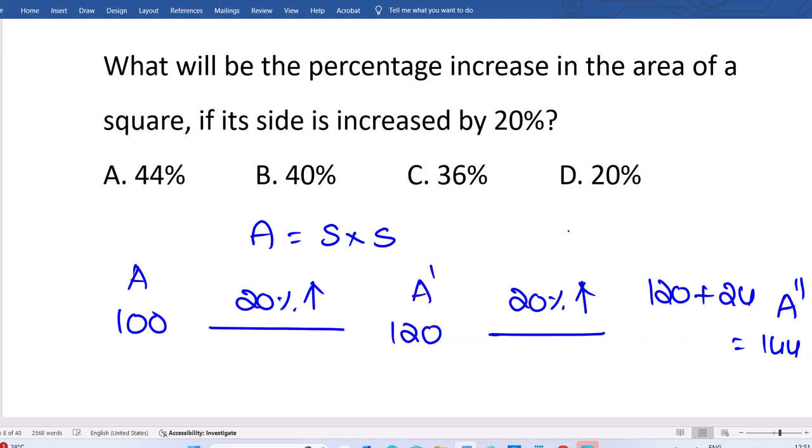So 100 become 144. That clearly indicates 44% increase. Option A, 44% increase.